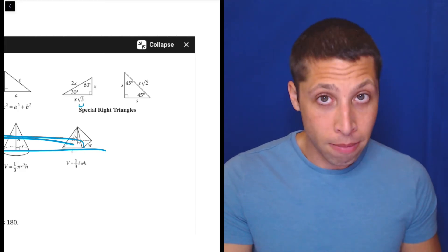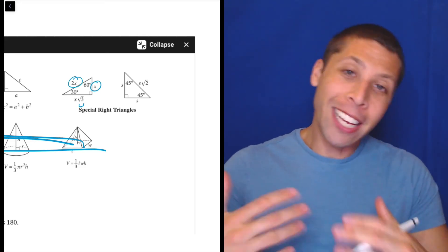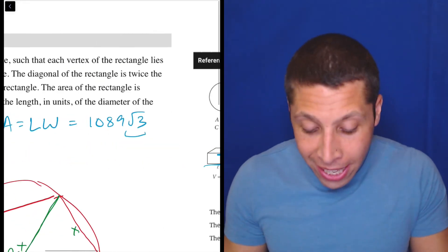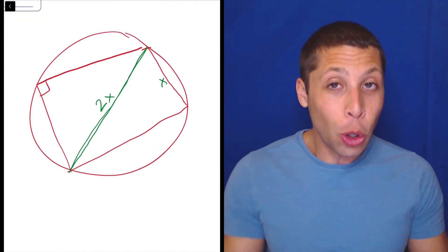We see the root 3, so maybe that matters. But I also see a 2x and an x, right? Like, this is why just writing that down on the picture, even though you might not know how it's going to help you, is a good idea.